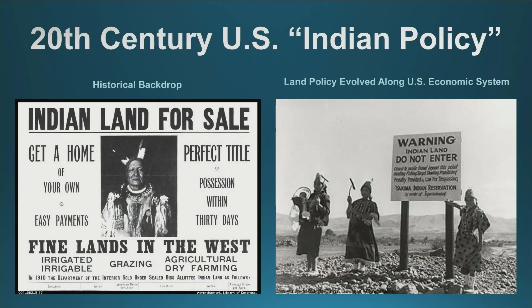Let's take a look at the first slide. Thomas Jefferson is a famous president in the United States and Americans look up to him as this benevolent figure because he wanted equality and he wanted democracy, but embedded in whiteness. And he wanted to ensure that the United States became a nation of small farmers. That's known as the Jeffersonian dream.